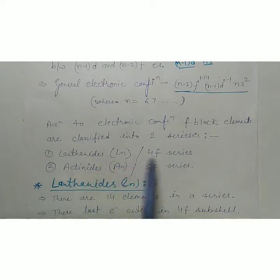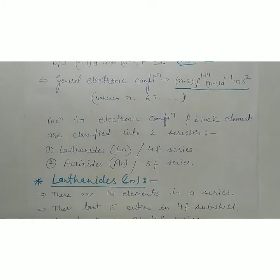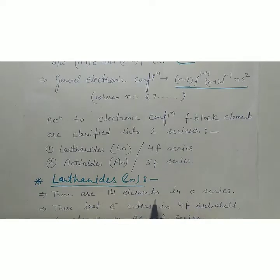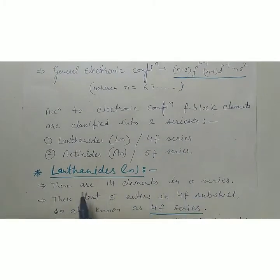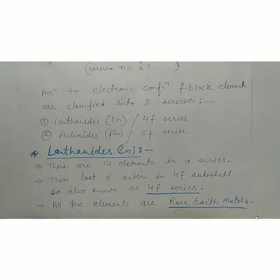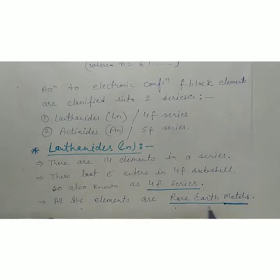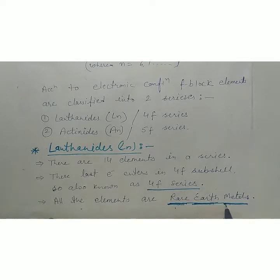Lanthanoids or lanthanons means the 4F series. Actinoids are the 5F series. In this video we will discuss lanthanides. There are 14 elements in the series, from cerium to lutetium, with the last electron entering 4F subshells. All the elements in this series are known as rare earth metals because they are all metallic in nature, found on earth, and are very rare elements.